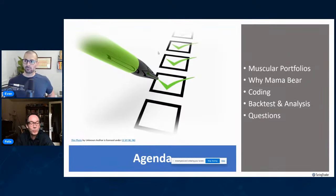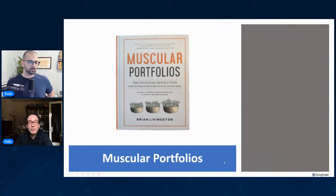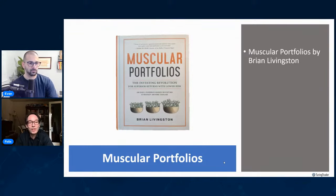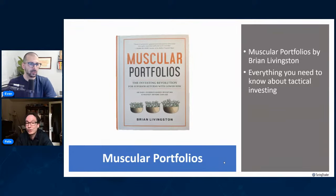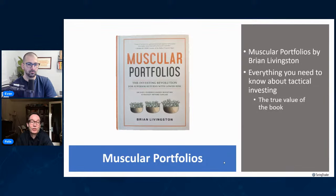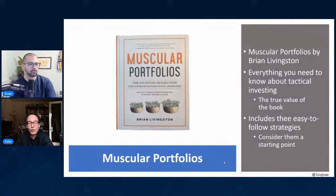Muscular Portfolios is a book by Brian Livingston — he's actually local here in Seattle, a very nice and humble guy. It's a fabulous book and I recommend it to anybody. It contains everything you need to know about tactical investing, and it's beautiful to look at — great pictures and illustrations. It includes three easy-to-follow strategies. You should consider these a starting point, not necessarily what I'd recommend you use, but it's a good place to get started.